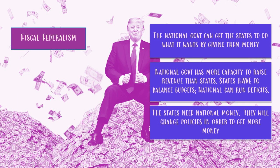Now we get into the heart of fiscal federalism — the national government influencing the states by using their superior money-making ability. The national government can get the states to do what they want by giving them money. The national government can tax income directly, tax every American's income, tax imports, and raise money in a variety of ways. The states don't have that same ability — they can charge taxes, but they have to worry about competition.